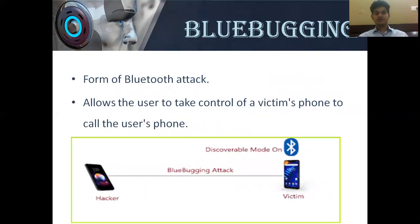Blue Bugging is a form of Bluetooth attack that allows an attacker to take control of a target phone to make calls. This is a schematic diagram showing how Blue Bugging occurs: a hacker makes a Blue Bugging attack on the victim when the victim's Bluetooth is on and in discoverable mode.